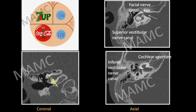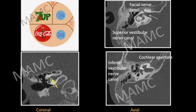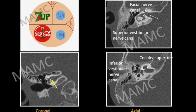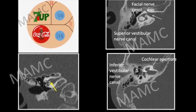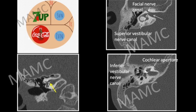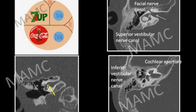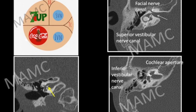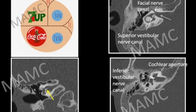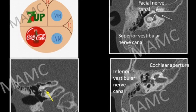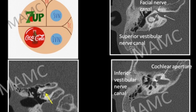The internal auditory canal (IAC) houses the seventh and eighth nerves, the eighth being the vestibulocochlear nerve. We cannot see these nerves directly on CT, but we can see the canals that carry them. On the top right image, the facial nerve canal exits anteriorly and posteriorly is the superior vestibular nerve canal. The seventh nerve lies superiorly and anteriorly, and the superior vestibular nerve is in the superior and posterior part of the canal. On the bottom right image, we see the cochlear aperture — the canal for the cochlear nerve — and the inferior vestibular nerve canal, both lying in the inferior part of the IAC.